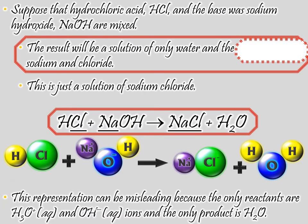We don't usually show an acid-base neutralization that way. Typically when we write a chemical equation, we write it like HCl plus NaOH — hydrochloric acid plus sodium hydroxide. The hydrogen from the HCl is going to swap places with the sodium in the NaOH, making water. And then the sodium sticks to the chloride, giving you NaCl — regular table salt. So the products are salt and water.